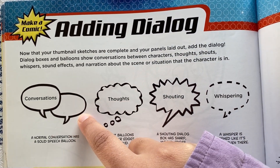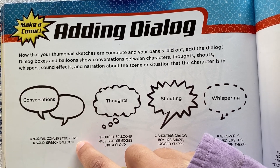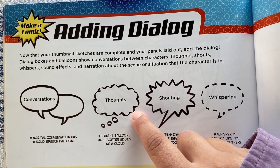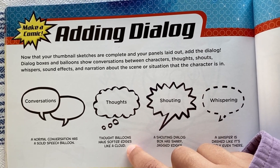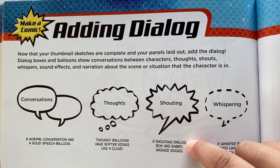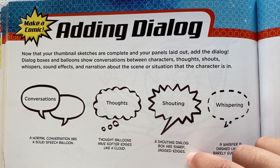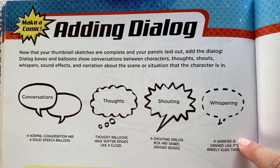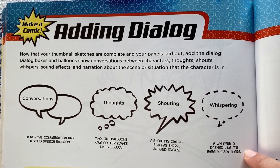Conversations: a normal conversation has a solid speech balloon. Thoughts: thought balloons have softer edges like a cloud. Shouting: a shouting dialogue box has sharp, jagged edges. Whispering: a whisper is dashed like it's barely even there.